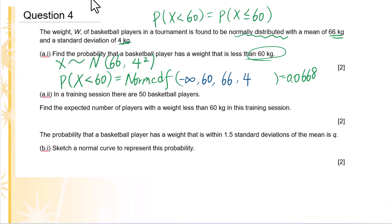A2. In a training session there are 50 basketball players. Find the expected number of players with a weight less than 60 kg in this training session. Expected number equals N times P: 50 times 0.0668 equals 3.34.